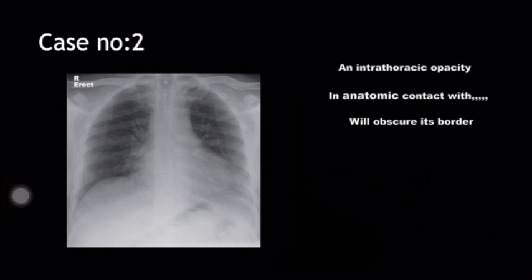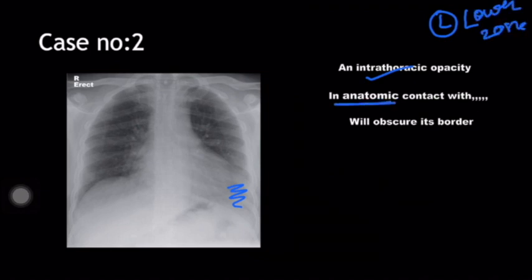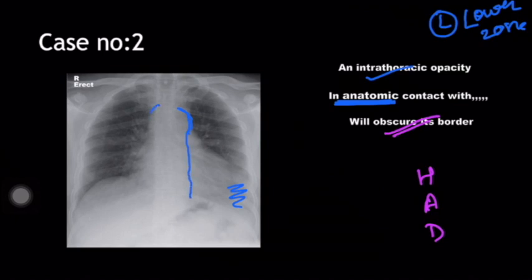Coming to case number 2 — there is an intrathoracic opacity in the left lower zone. To find out the anatomical location, let's look at what it is obscuring: heart, aorta, or diaphragm? Let's take the aorta first. This is the region of the aortic knuckle, this is the descending aortic line, here forms the ascending aorta — so the aorta is intact.